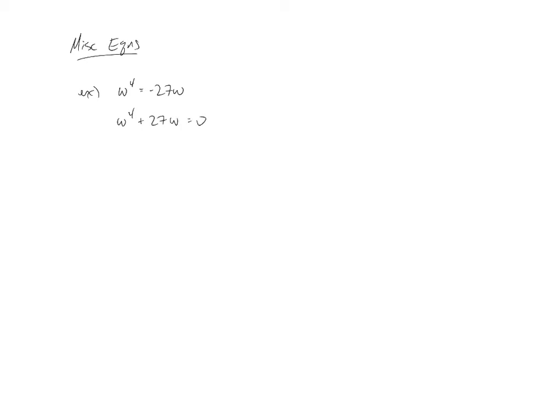So we've got w to the fourth plus 27w equals zero, at which time now we can factor out a w. And when we have these two factors now multiplied together equaling zero, you can actually see we do get w equals zero as a solution. So now we'll move over to w cubed plus 27 equals zero. We'll go ahead and factor this. This is a sum of cubes,